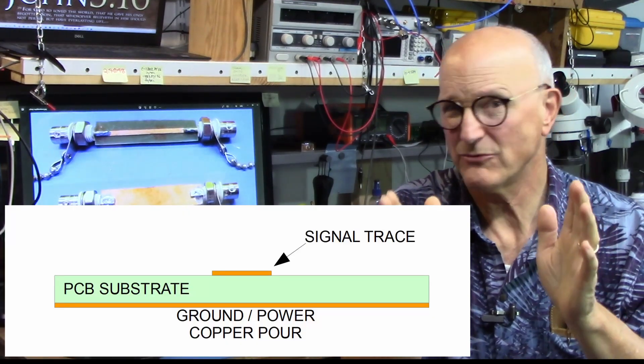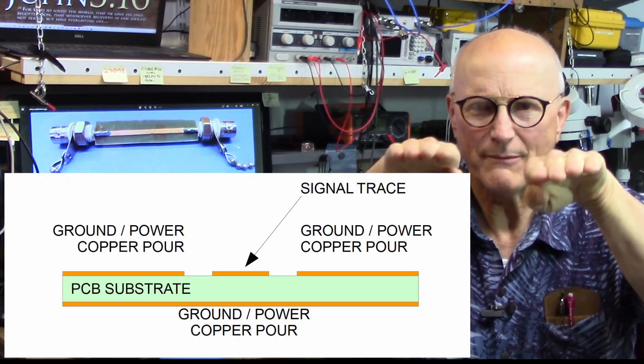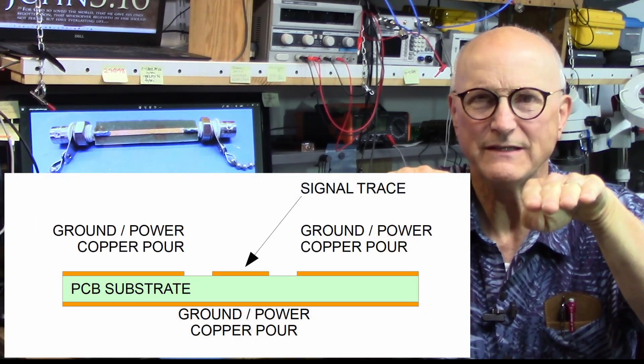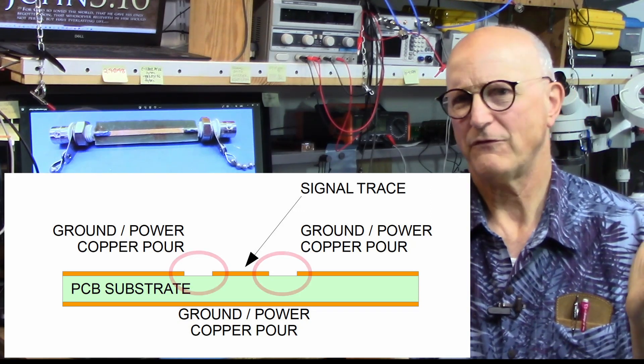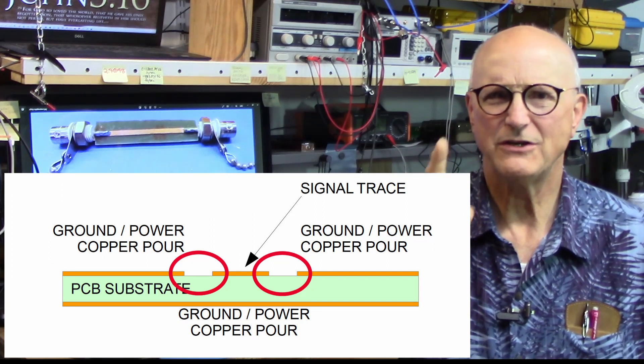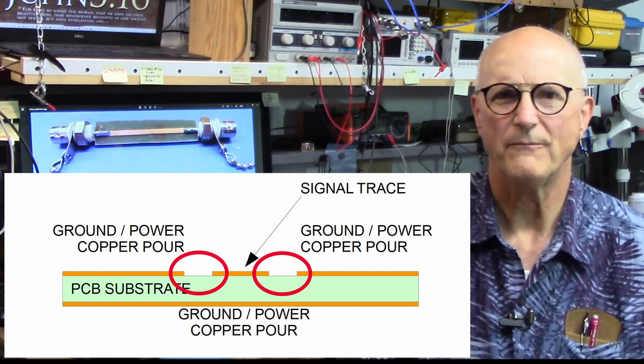Don't let the name coplanar waveguide with ground scare you off. It's just a fancy name for what really isn't that much more complicated. In fact, it is exactly the same as a microstrip line, except the signal carrying trace has a power ground copper pour surrounding it at a given distance. To design one of these, we need all of the same information, plus we need to know the distance between the signal carrying trace and the surrounding copper pour. So how do we go about designing this?